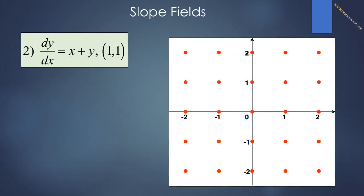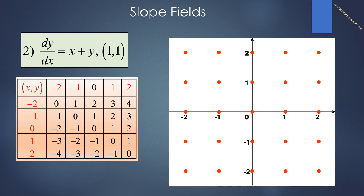We next look at the more complicated differential equation dy/dx = x + y. We would like to create a slope field and then look at the specific solution going through the point (1, 1). With the slope simply being the sum of x + y, it is generally very easy to create the 25 points. Note the pattern that when x is equal to -y, the slope is always equal to 0. When the y value is greater than x, the slope is positive. When the y value is less than x, the slope is negative.